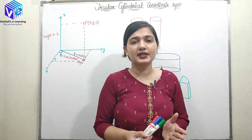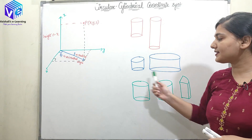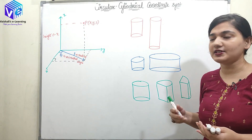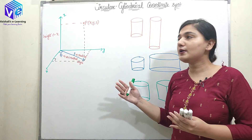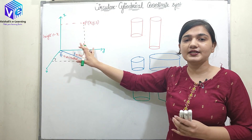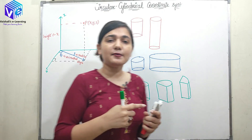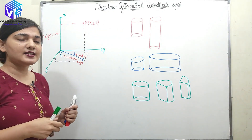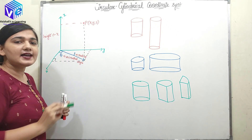If I have cylindrical type of objects — objects which have circular cylindrical symmetry — and if I have to denote each and every point of these objects, then I will be using the circular cylindrical coordinate system. Here we have three parameters: like we had x, y, and z in the Cartesian coordinate system, here we have rho, phi, and z.